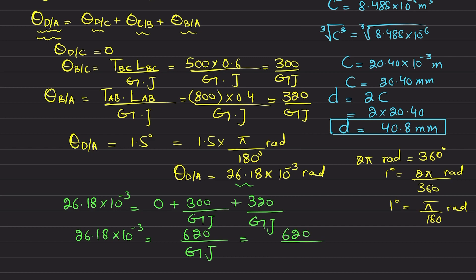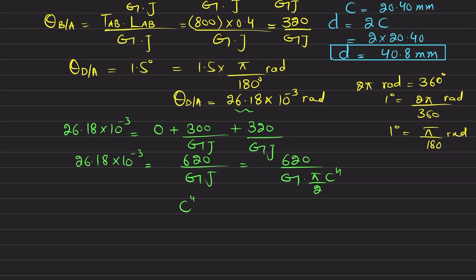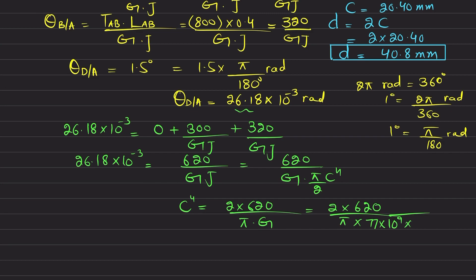Substituting J = (π/2)c⁴, we get c⁴ = (2 × 620) / (π × G × 26.18 × 10⁻³). With G = 77 × 10⁹ Pa, this gives c⁴ = 195.80 × 10⁻⁹ m⁴.